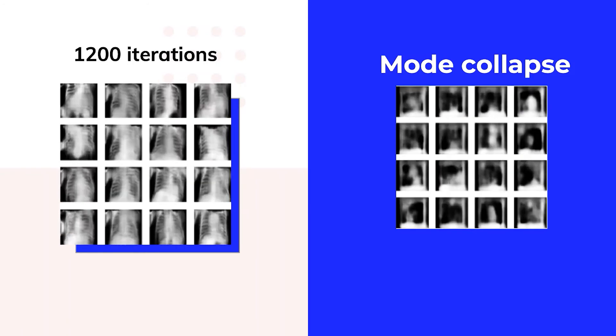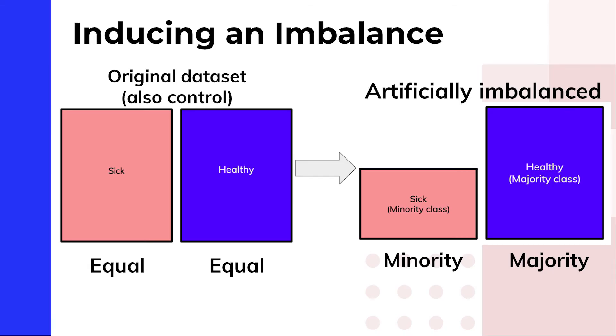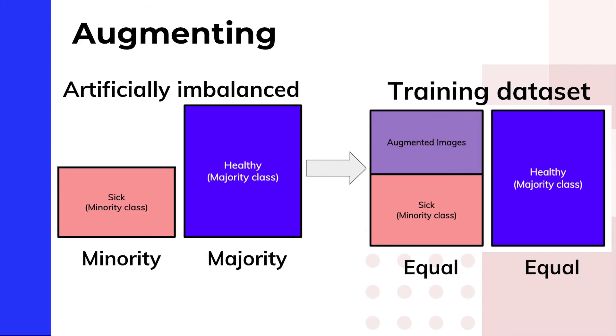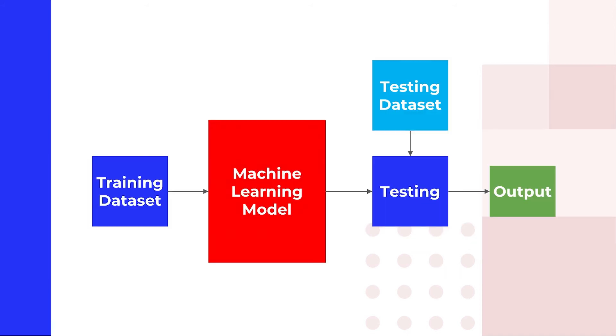We set up a trial as a dataset containing equal numbers of sick and healthy images. We then artificially reduced the sick dataset by 50% and applied both simple and GAN augmentation separately and together in distinct trials. This was finally combined with a healthy dataset to form the final dataset which we passed through the machine learning model. After training, we fed the model with a testing dataset to classify in order to evaluate the efficacy of each augmentation technique.